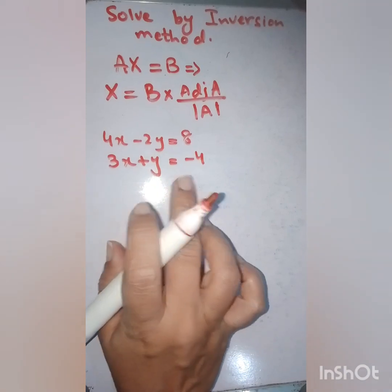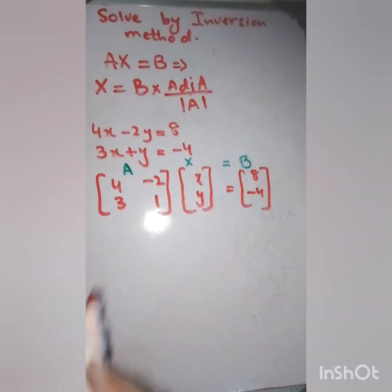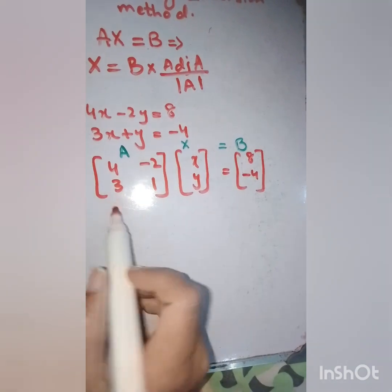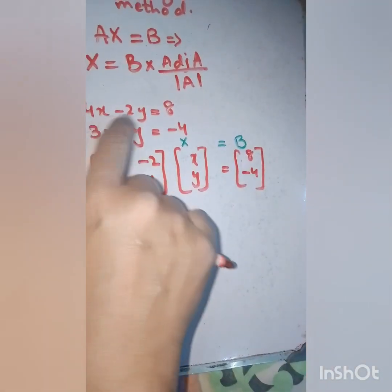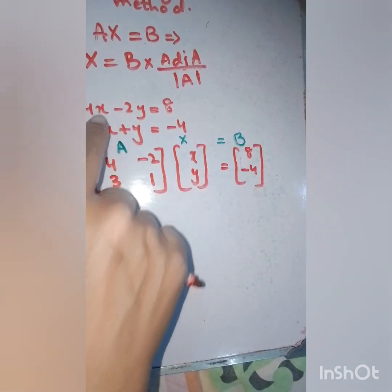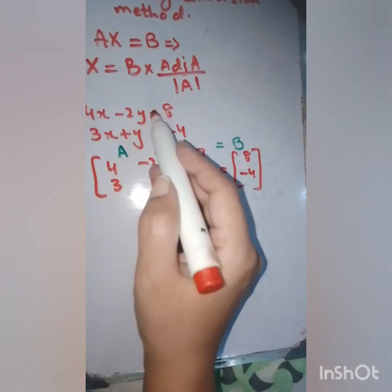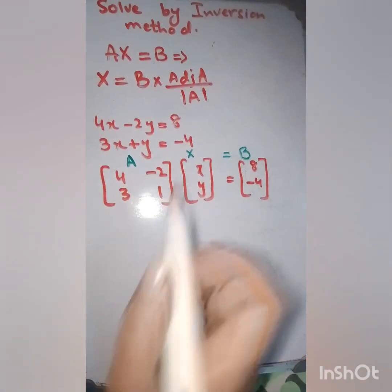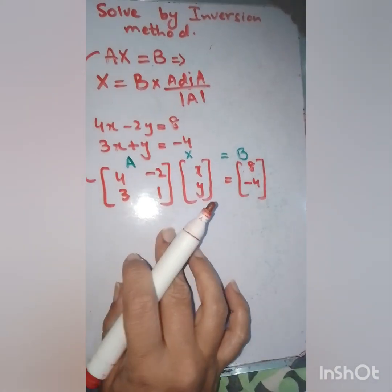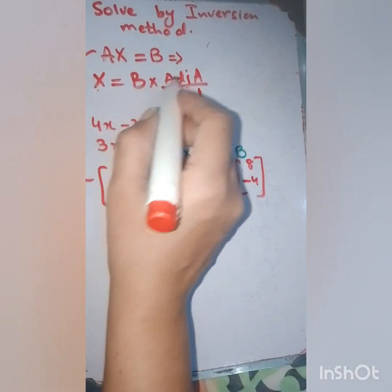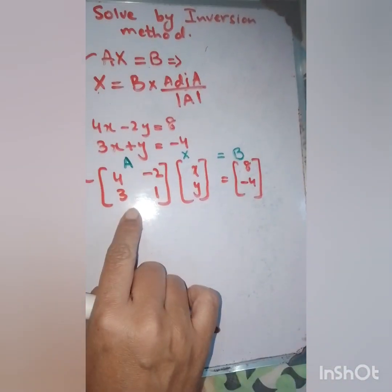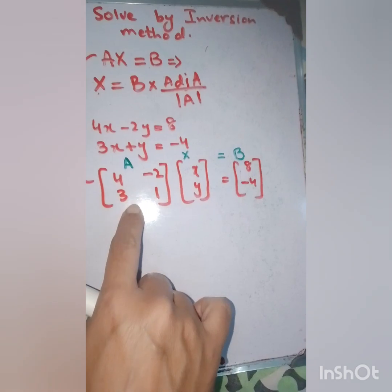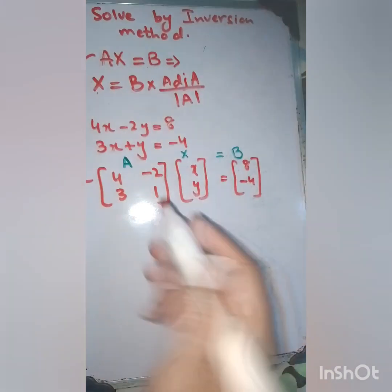I have written the formula and taken a system of linear equations. Here is my matrix A, this is X, and this equals B. I have taken out the coefficients and written them in matrix form. The two equations share the same variables x and y, so this is my x-matrix, and equals 8 and minus 4 for B. Now we need to convert this into the form X equals A inverse times B.